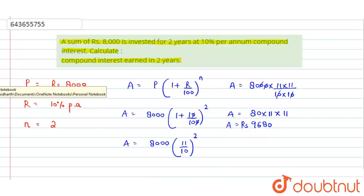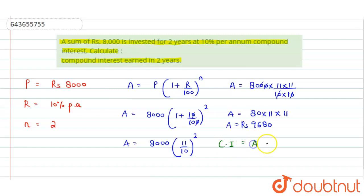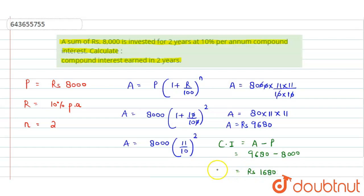From this we can easily calculate compound interest. Compound interest equals the amount at the end of two years minus the original principal — that is 9680 minus 8000 — which gives us rupees 1680. This is the compound interest earned in two years.